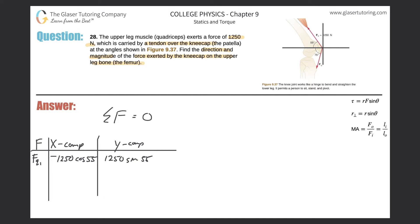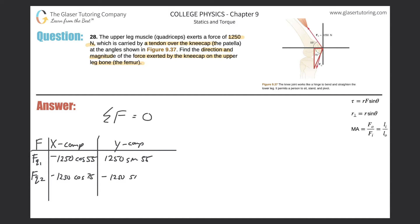Now for the second quadriceps force, FQ2. Draw the right triangle again. The x-component is again a cosine value, pointing in the negative x-direction: negative 1250 times cosine of 75 degrees. We can already see these are not balanced. The y-component is also negative: negative 1250 sine of 75. Those are not balanced either.